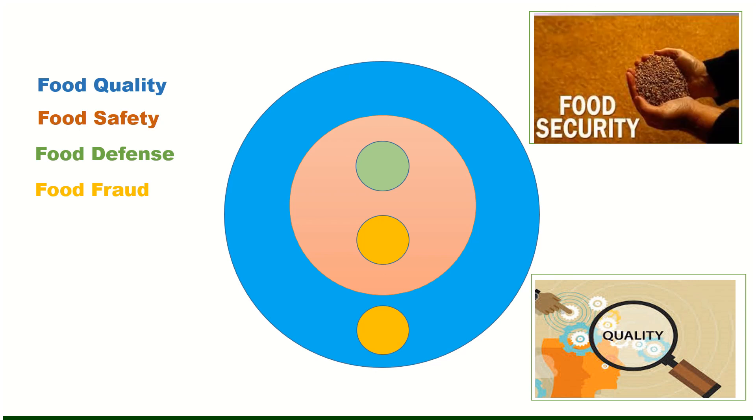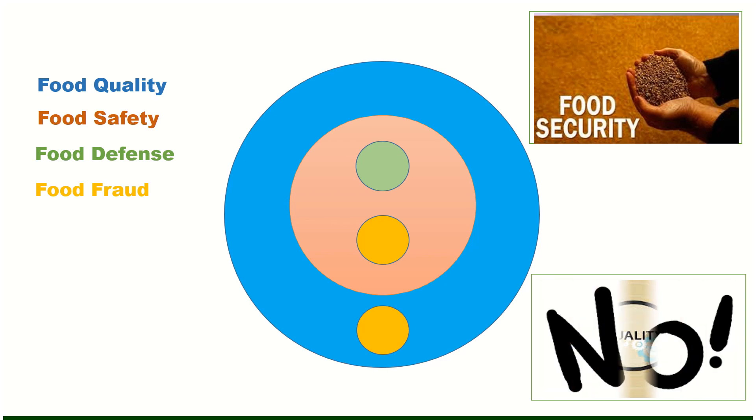Now the point has come to understand food security. Is it the same as food safety? The answer is no. Food security is a biggest circle in all and includes food quality, food safety, food defense and food fraud.